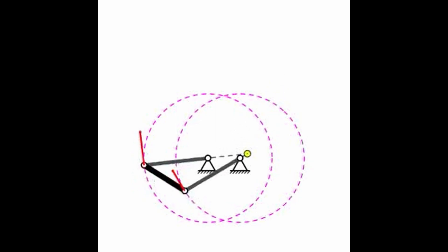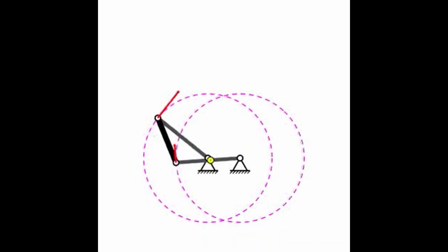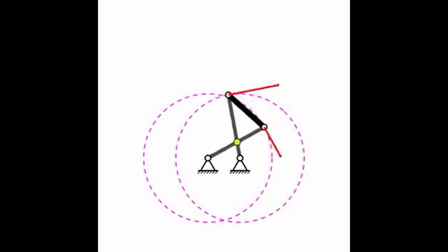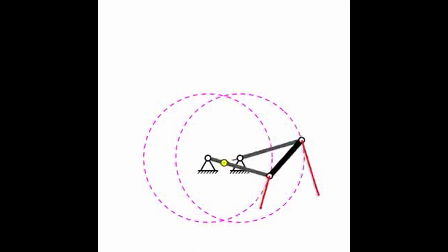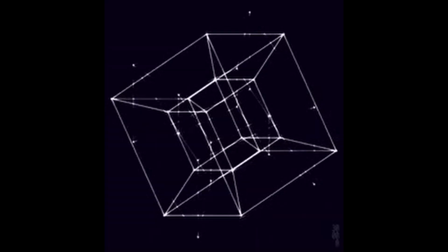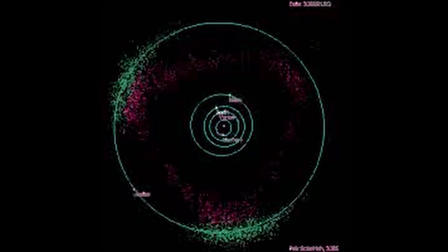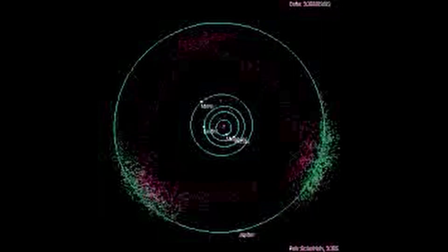1. Angular Position. Angular position represents the angle between a reference line and the object's position vector relative to the axis of rotation. It is measured in radians (rad), where a complete revolution corresponds to 2π radians, or 360 degrees.